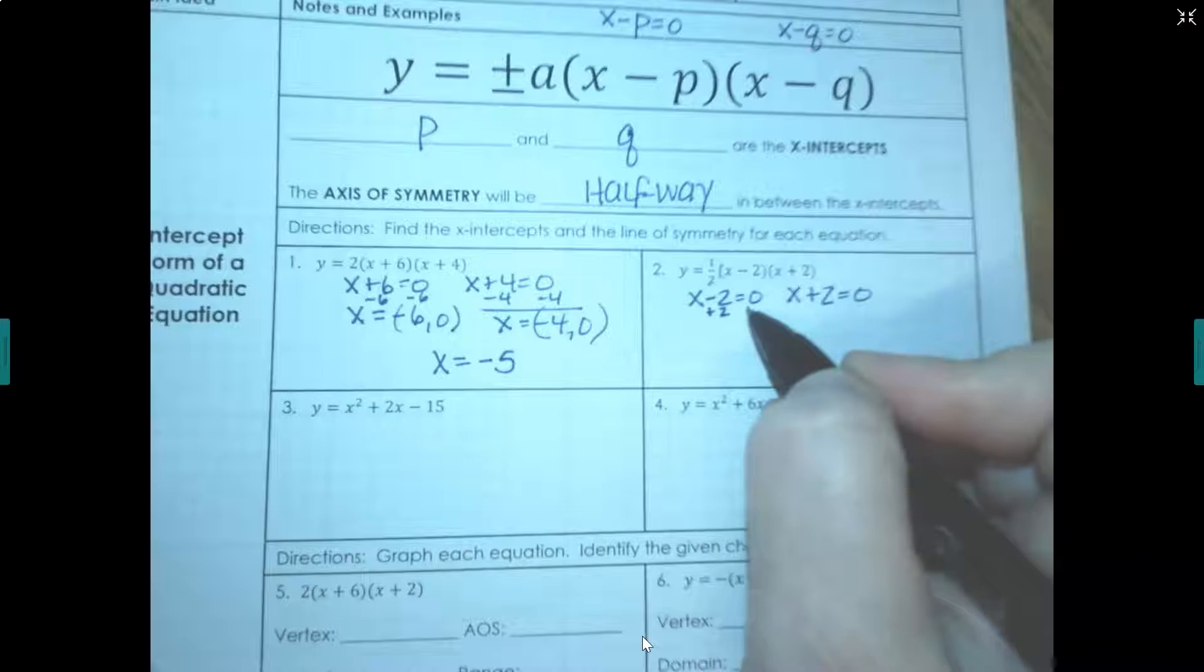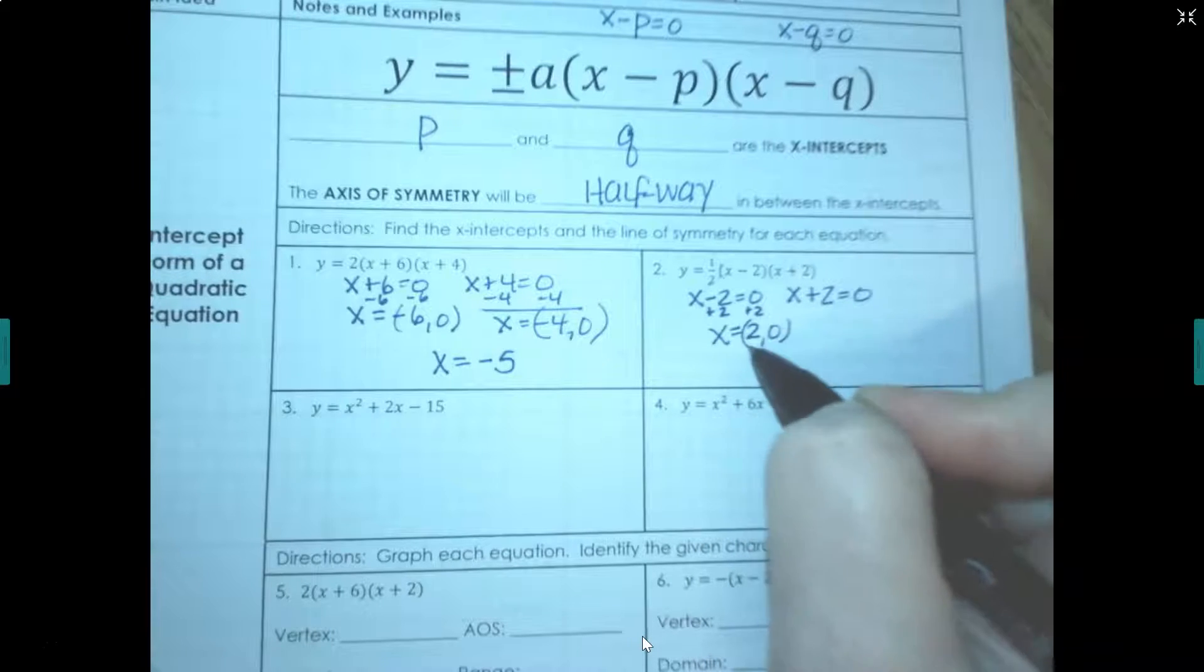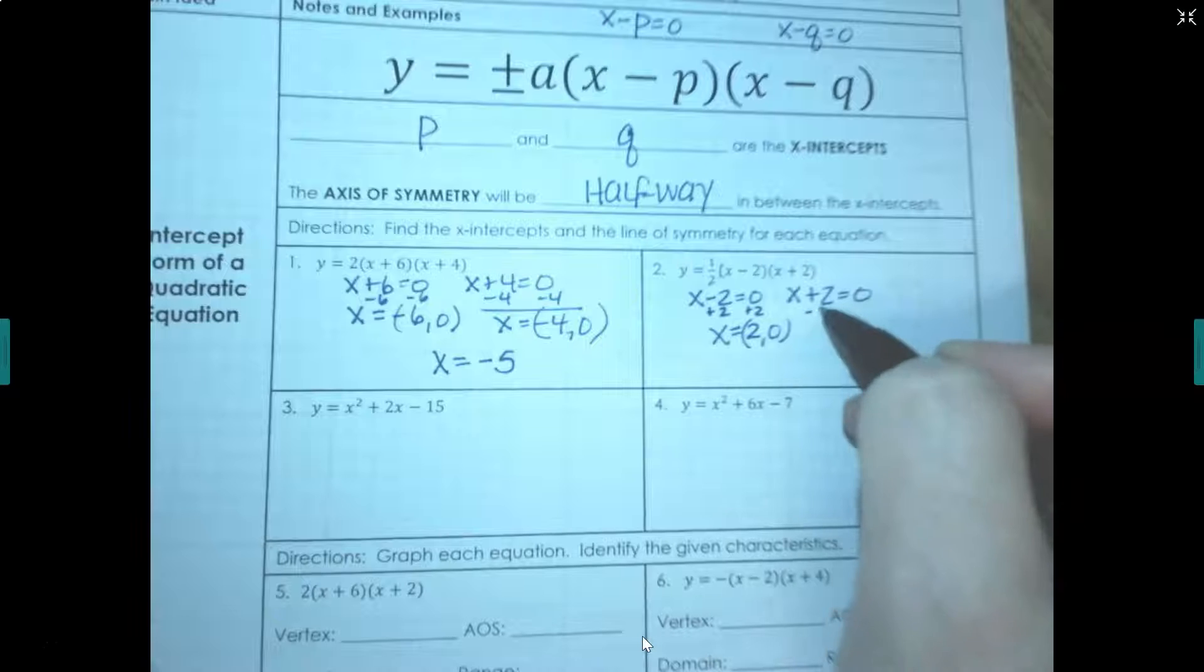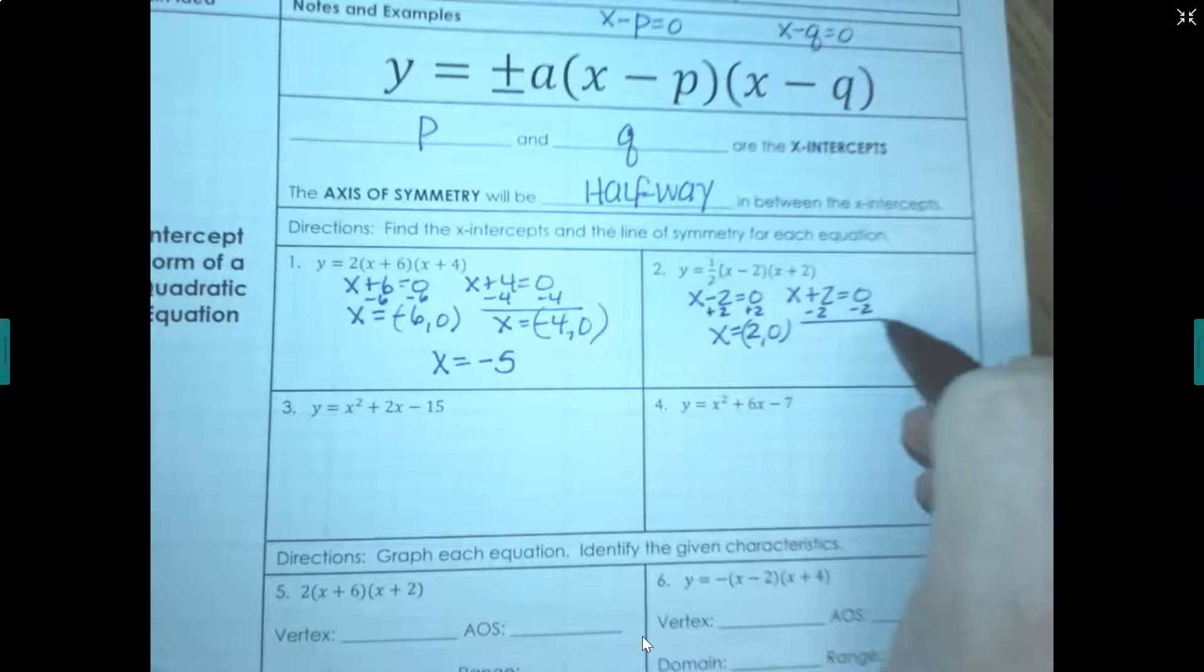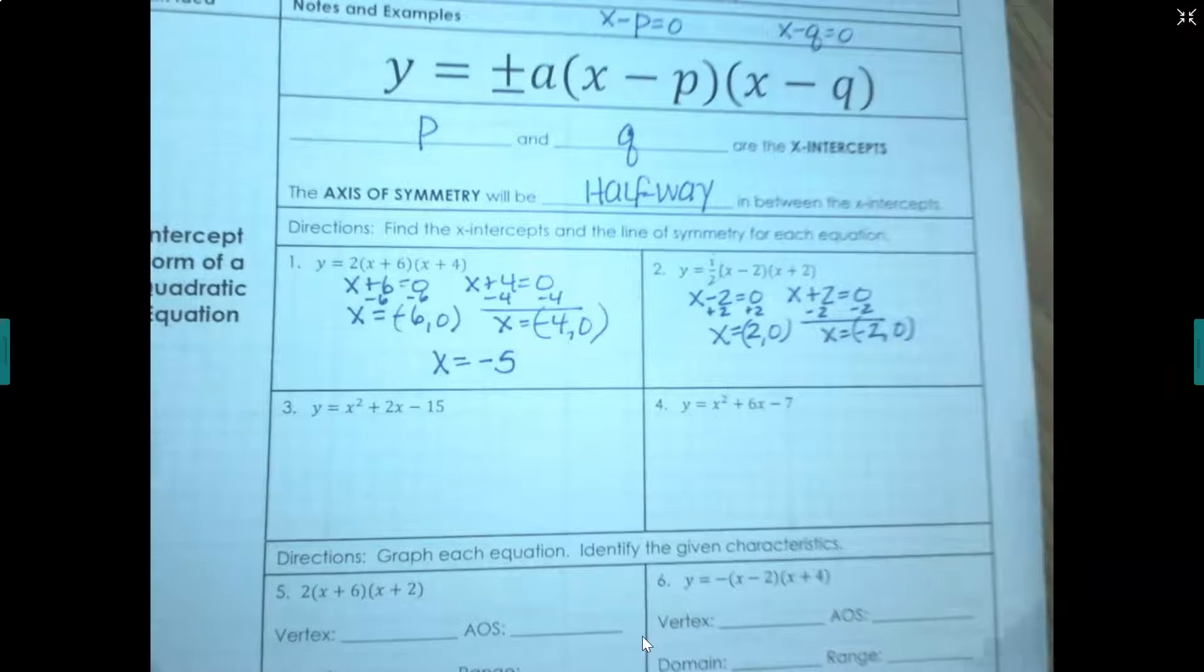If I solve this equation, I get x equals 2. So my x-intercept is at 2, 0. If I solve this equation, I get x equals negative 2. So my other x-intercept is at negative 2, 0.